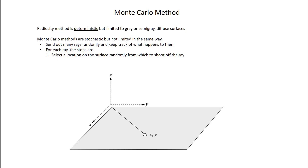This is the last lecture of 564, and we're going to talk about the Monte Carlo technique. We've been building up to the radiosity method, which uses surface resistances and surface-to-surface resistances. This technique is limited — we can only deal with diffuse surfaces and gray or semi-gray surfaces. If you want to do radiation heat transfer without these limitations, you have to go towards the Monte Carlo technique.